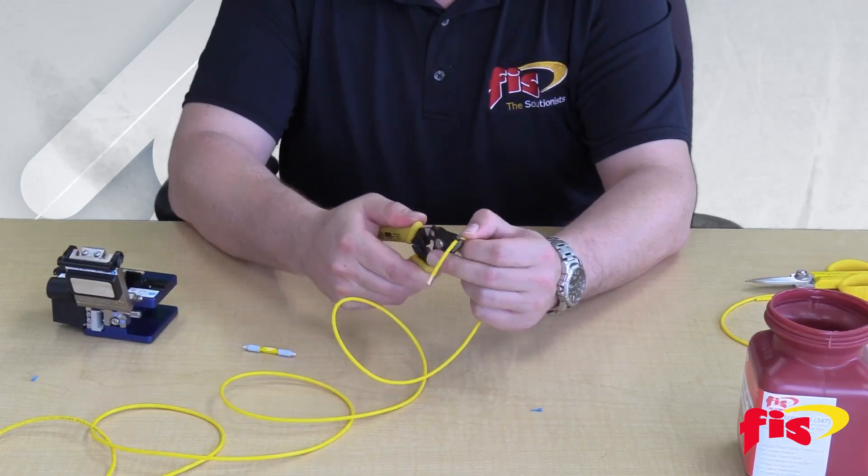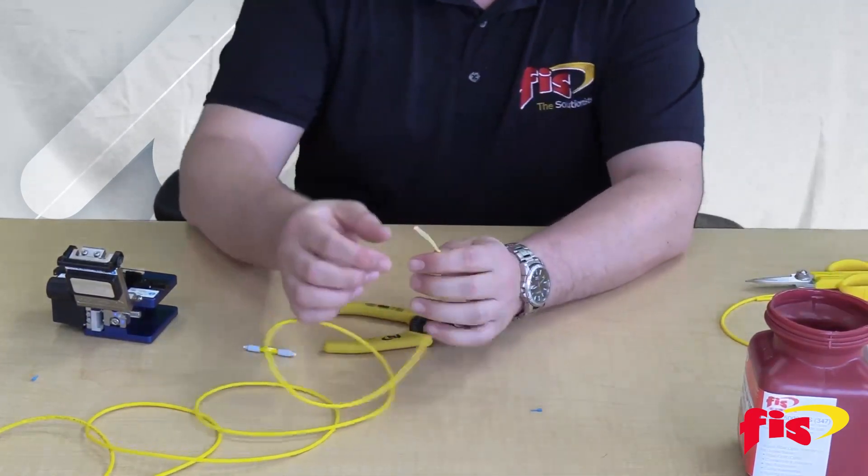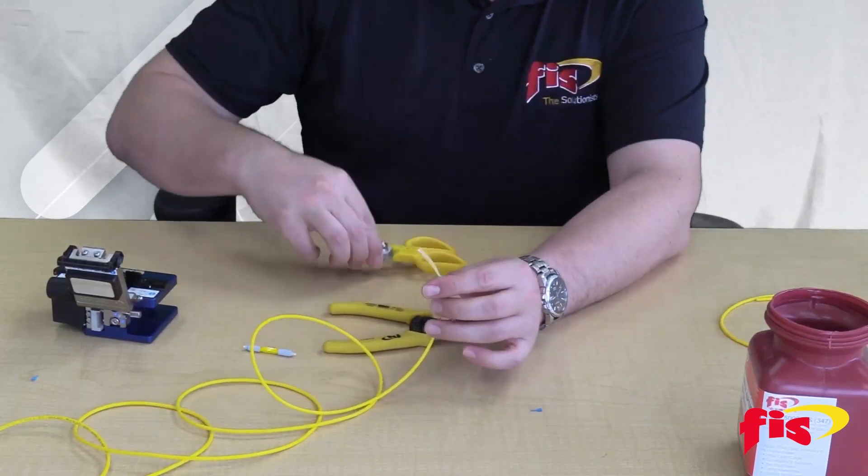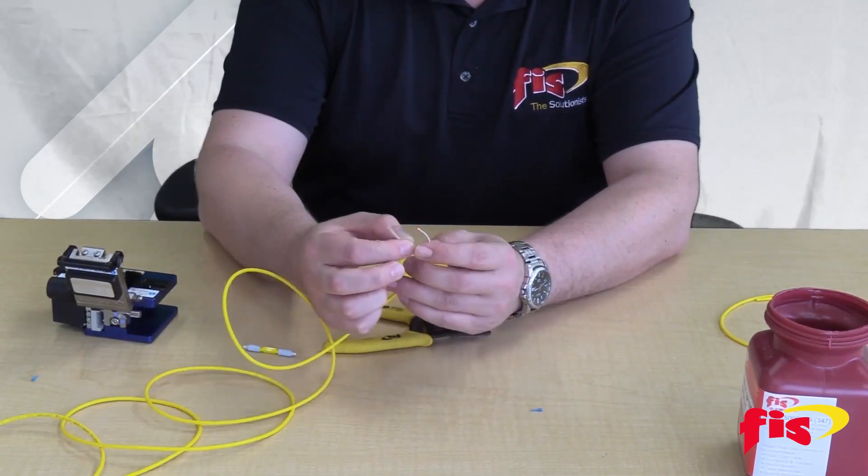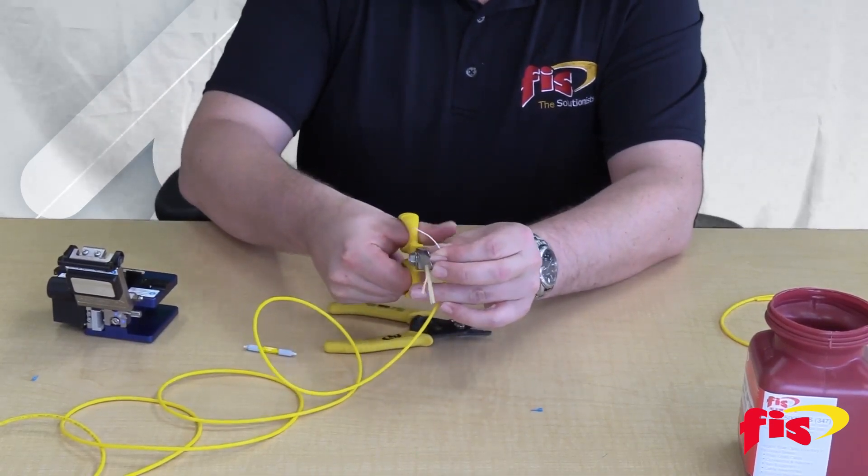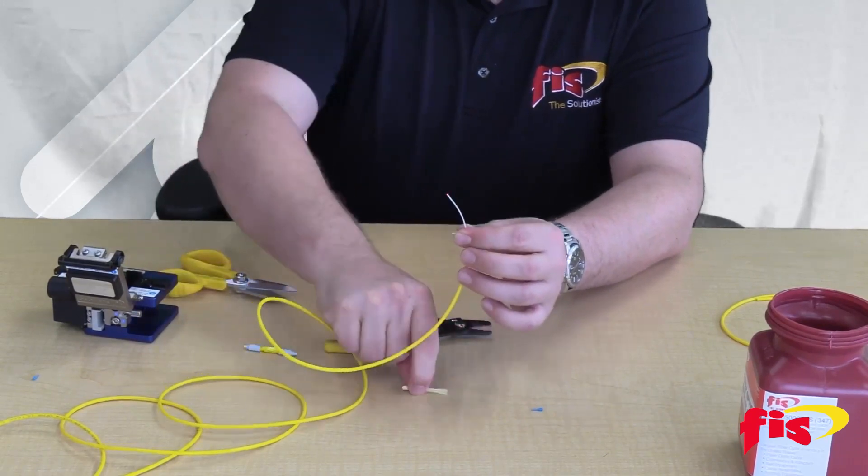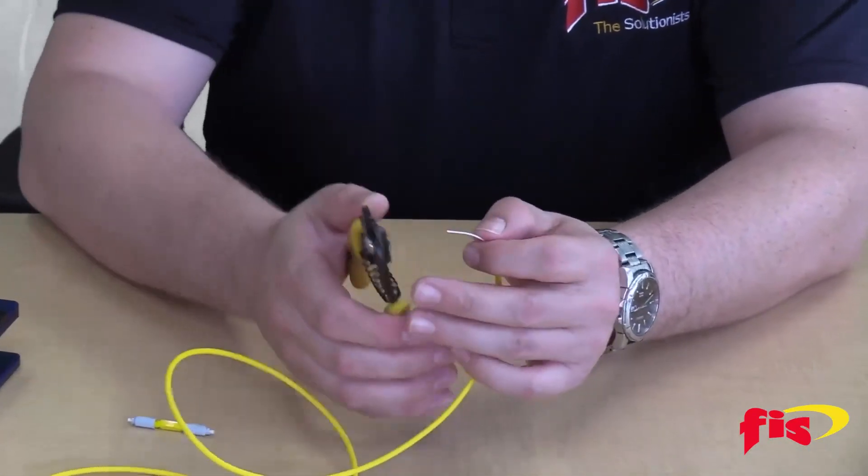First, you want to strip off your outer jacket by using the top hole of the three-hole stripper, or the biggest hole. You can then cut the extra Kevlar off of the cable like so.